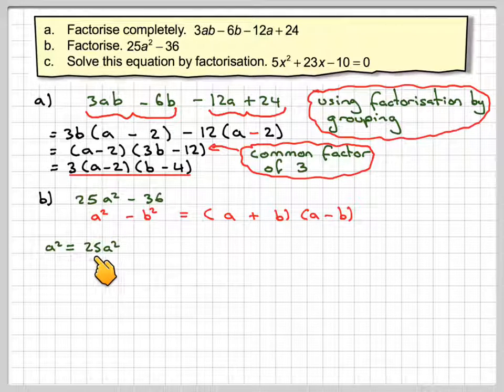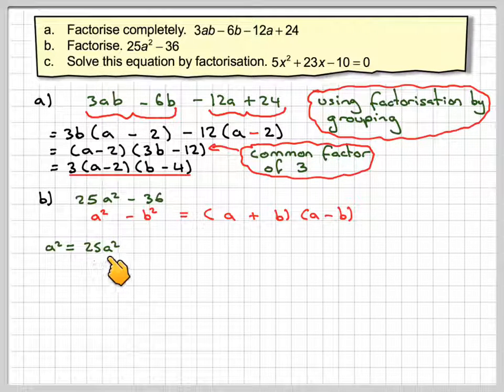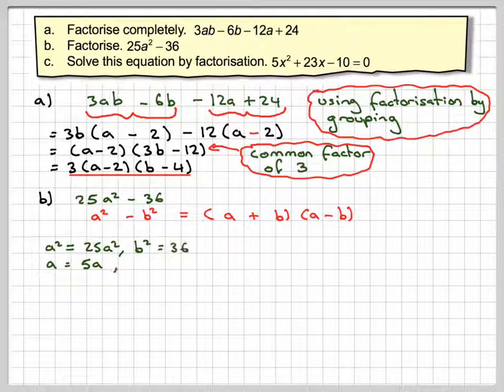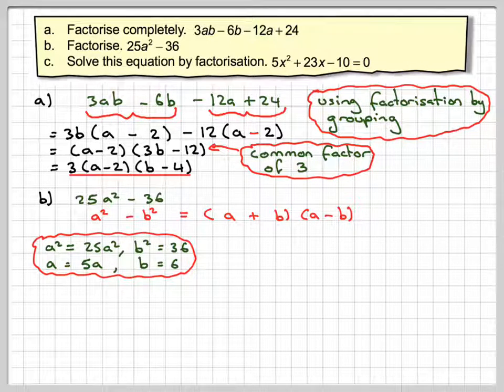So a squared will be 25a squared, but we want to find a for this, so just take the square root of that. Square root of 25 is 5. Square root of a squared is a, so we get a is equal to 5a. Similarly, b squared is 36, and if you take the square root of that, b is 6.